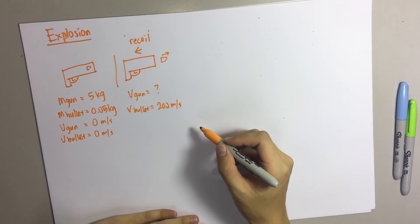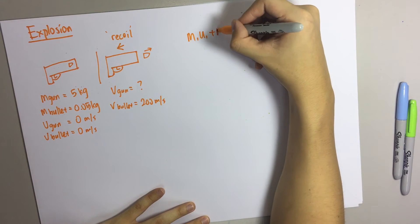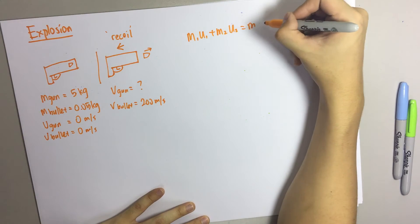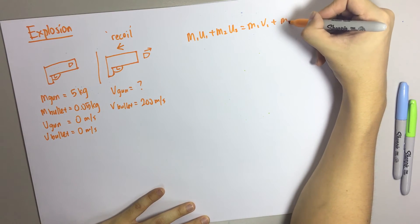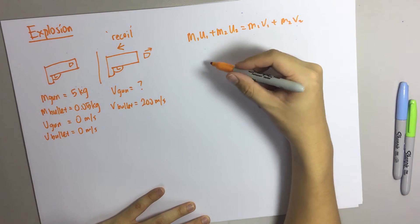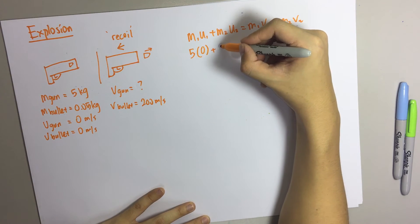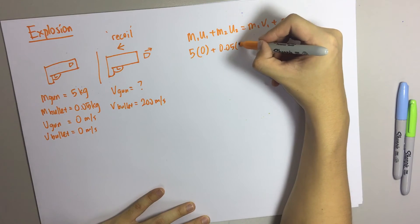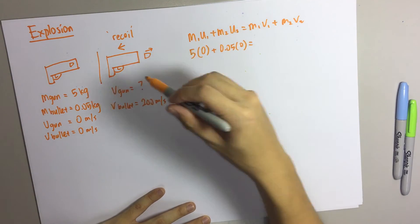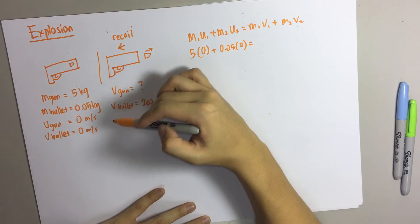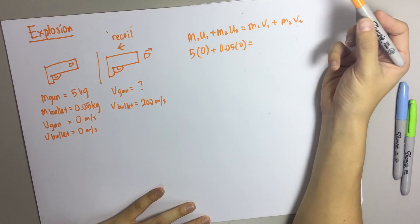For this question, how do we do it? We apply the formula M1U1 plus M2U2 equals to M1V1 plus M2V2. So M is 5U0 plus 0.05V2. For the momentum before collision of explosion questions, it will always be 0 because both the gun and the bullet are not moving.